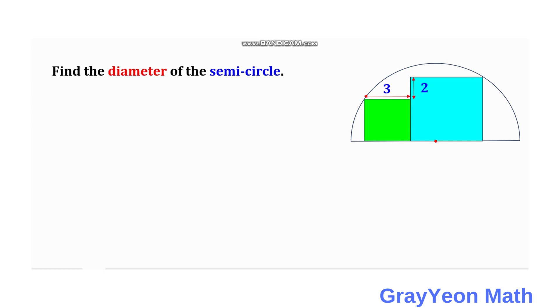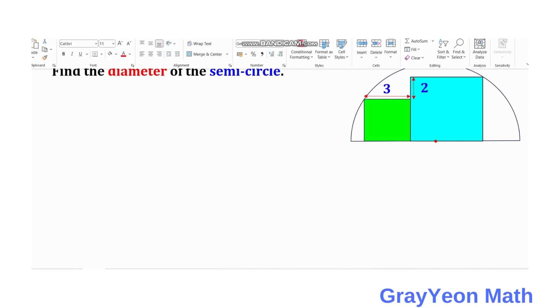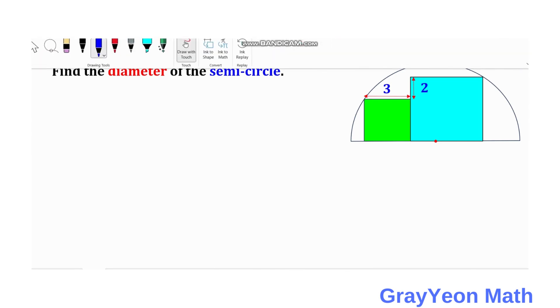So first thing we need to do is we need to define the radius of this semicircle by drawing a line from this point to the center of the circle. And that is one radius and also this radius.